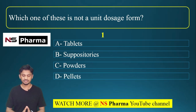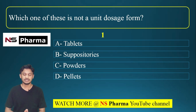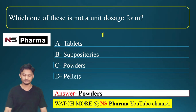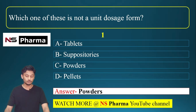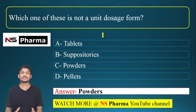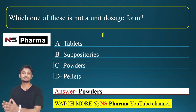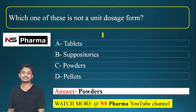The correct answer for this question is option C, powders. Powders are not a unit dosage form — they are a bulk dosage form. Unit dosage forms are dosage forms which we can count, like tablets. We can take 1 tablet, 2 tablets, 3 tablets like that.